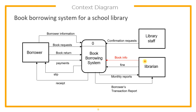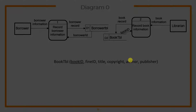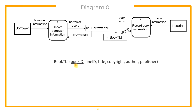Let's proceed with book information. In book information, we have the book ID, fine ID, title, copyright, author, and publisher. The librarian provides the information, which is then stored in our book table. If the book ID is generated by the system, we get the last value stored in book ID plus one, and that becomes the new book ID.